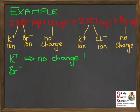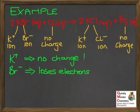The bromide ion, on the other hand — it goes from Br⁻ on the left to Br₂ on the right. So we're going from the negative ion to the neutral molecule, meaning we're losing electrons here. And that's, by definition, oxidation. So the bromide ions in potassium bromide have been oxidized.